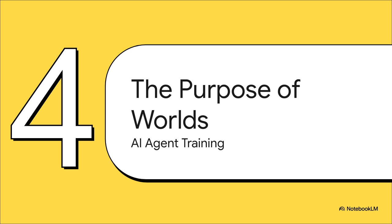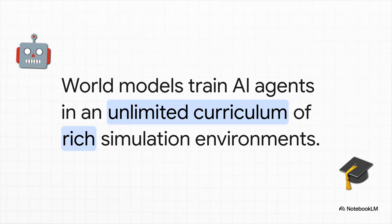All of this is incredibly cool from a creative perspective, but there's a much deeper, more scientific reason for building all this. Why on Earth would you go to all the trouble of building a universe generator? The main reason is to solve one of the biggest problems in AI research: not having enough training environments. To teach a really capable AI agent, like Google's game-playing agent SEMA, you need it to practice in millions, or even billions, of different situations. Genie 3 can provide a literally infinite curriculum of training worlds, all generated on demand.